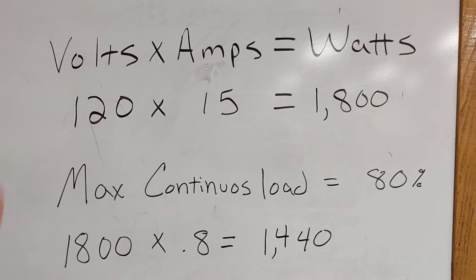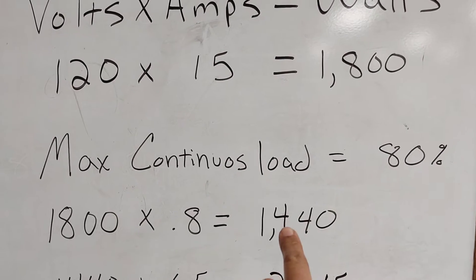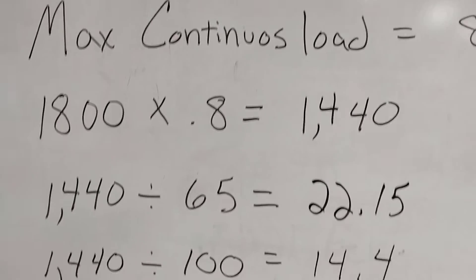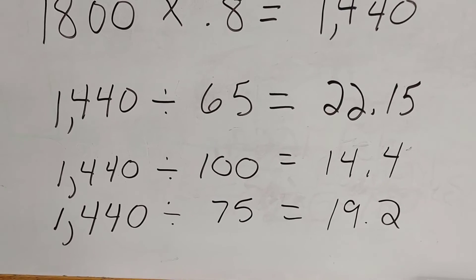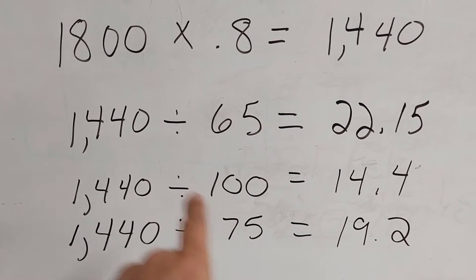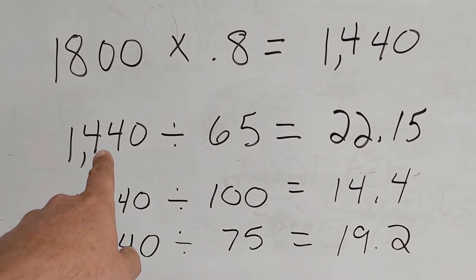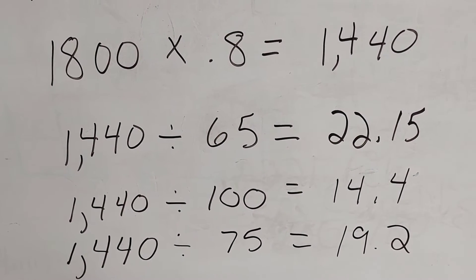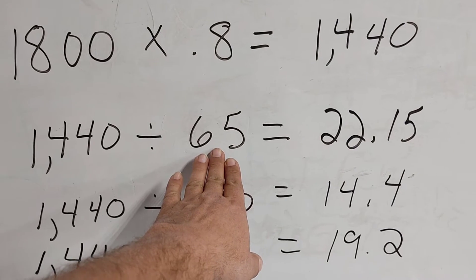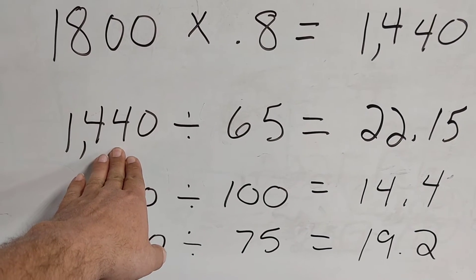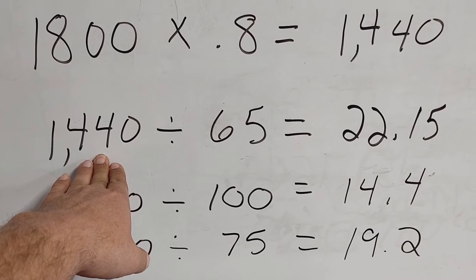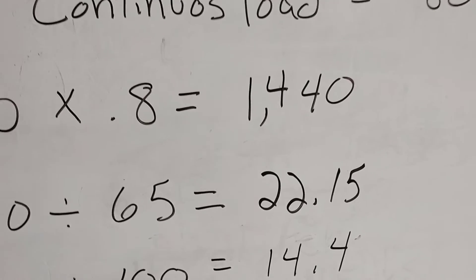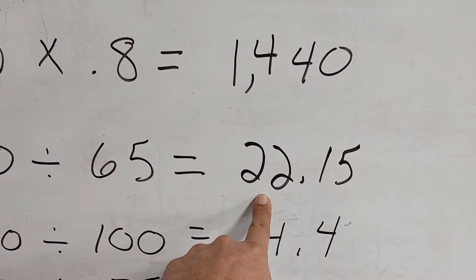I have our 1,440 watts divided by 65 watts—we're dividing the wattage of the fixture by the actual wattage that we're allowed to use on a 15 amp circuit—and we come up with a total of 22 fixtures. But now say you are using a fixture that's rated for 100 watts. You're going to divide 1,440 by 100 watts, and you're going to be able to put 14 fixtures on that 15 amp circuit.